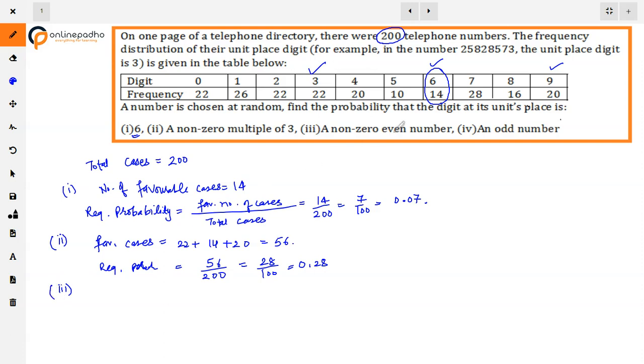The third part is a non-zero even number. We need to exclude zero and include 2, 4, 6, and 8. We add these frequencies. The favorable cases will be 22 plus 20 plus 14 plus 16, which equals 72. The required probability is 72 by 200, which is 36 by 100, or 0.36.